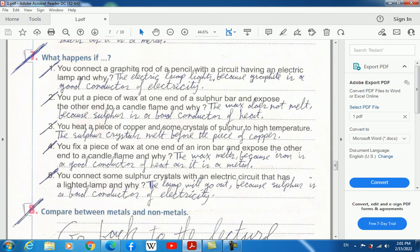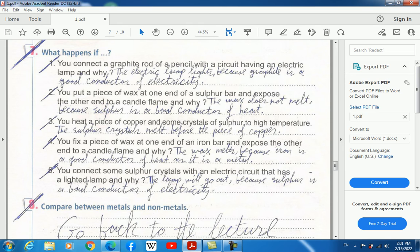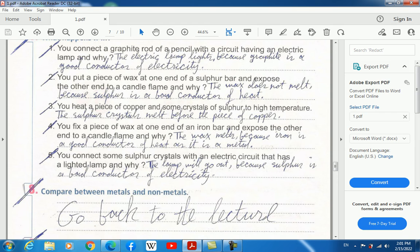Fifteen, what happens if you connect a graphite rod of a pencil with a circuit having an electric lamp, and why? The electric lamp lights. This happens because graphite is a good conductor of electricity.